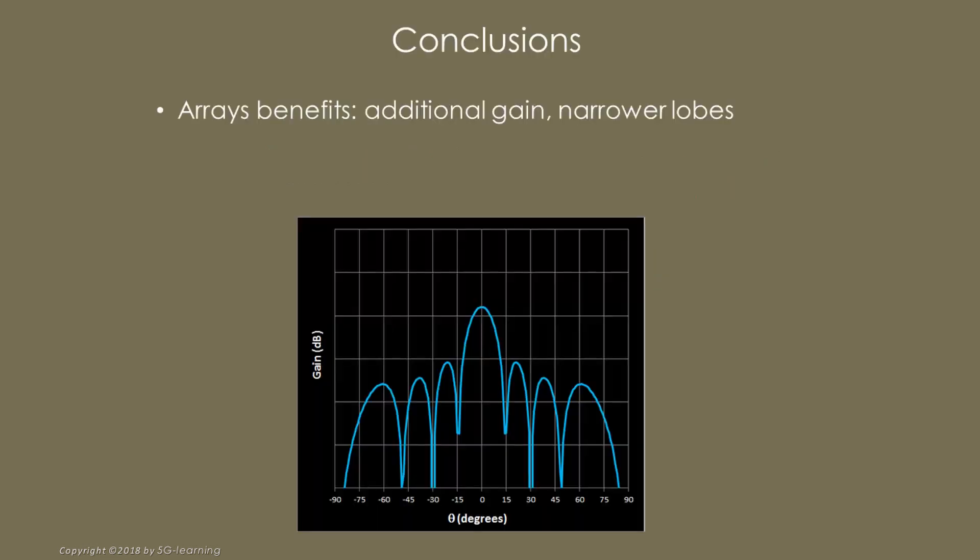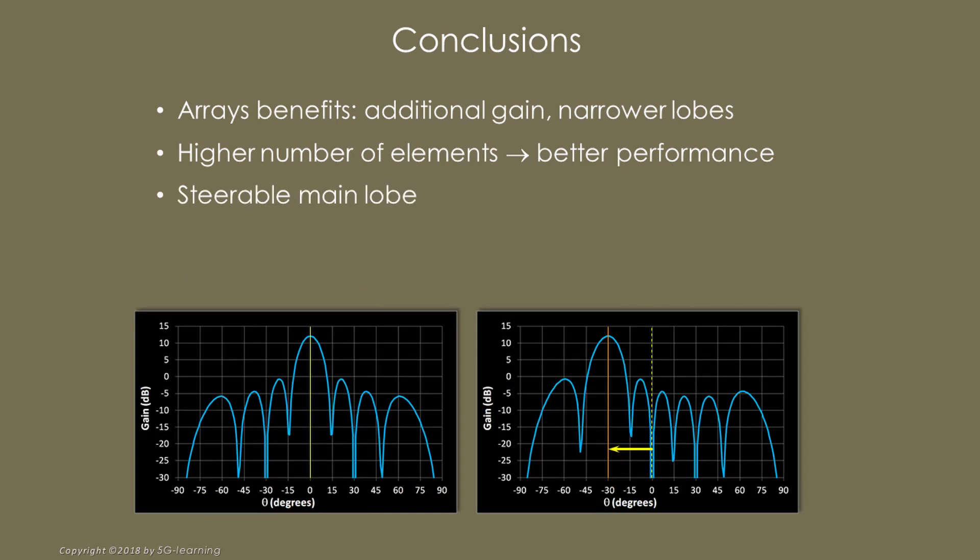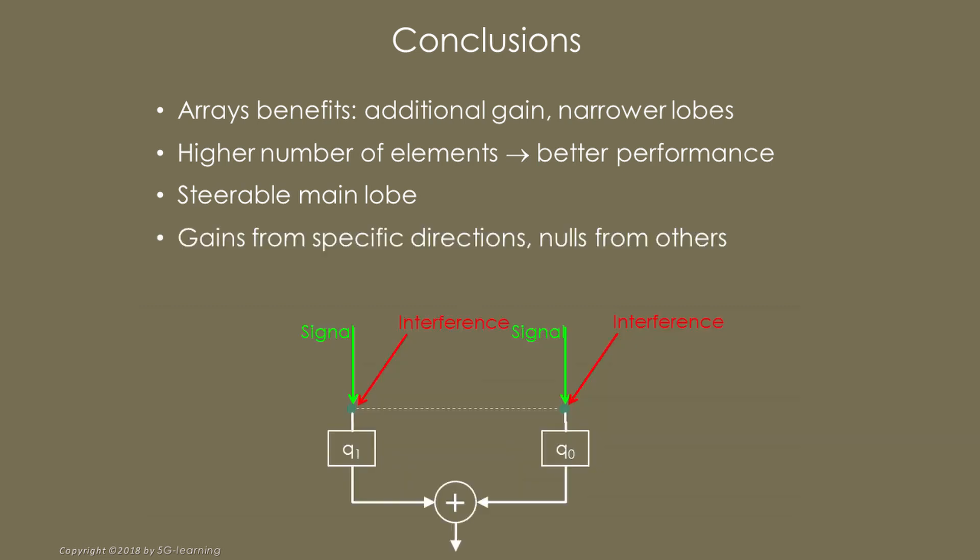Conclusions. Arrays based on several antenna elements provide additional gain and relatively narrow main lobes. Performance increases as the number of array elements grows. Using specific delays, it is possible to steer the main lobe in the direction where the remote transmitter or receiver stands. If branch waves are appropriately selected, the array can receive signals from one direction, while simultaneously block interference from others. Optimal wave selection has been, and still is, an active research field.